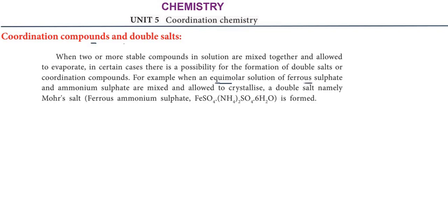For example, an equimolar solution of ammonium sulphate forms a double salt. The components separate out and operate as individual solid particles. The double salt namely, ferrous ammonium sulphate, is formed. So here is a double salt — it contains two salts with different crystal structures, which is what we call a double salt.